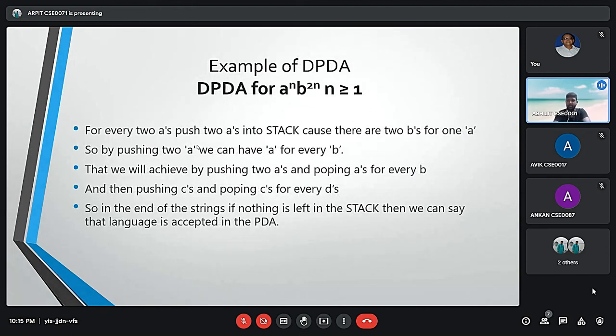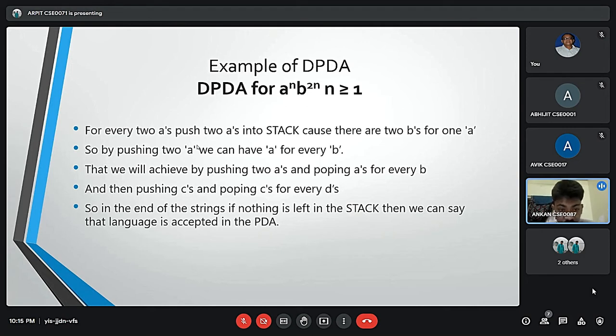Thank you Vijit and good evening sir. Now I will explain an example of DPDA. We have taken the DPDA for a^n b^2n where n is greater than or equal to 1. The strings generated by the given language are: L equals {abb, aabbbb, aaabbbbbb} and so on. Here A is followed by double the Bs.